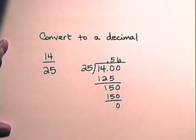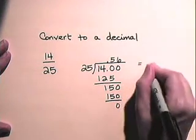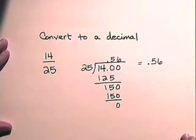So, this divides evenly with a remainder of zero. So, 14 twenty-fifths to two decimal places is 56 hundredths or .56.